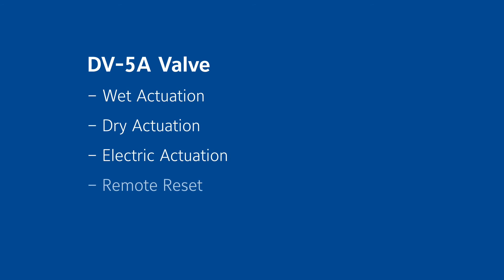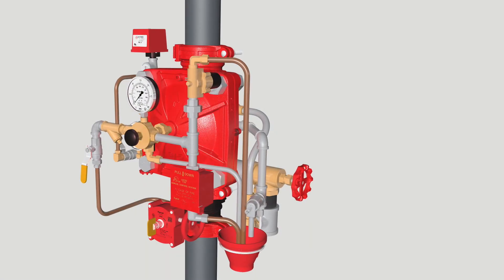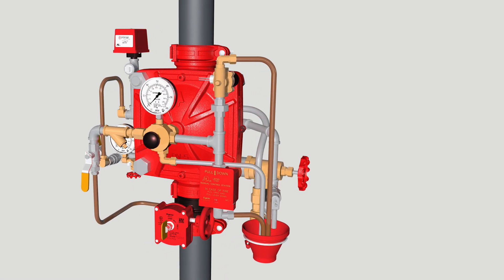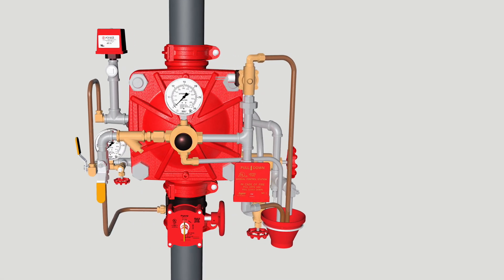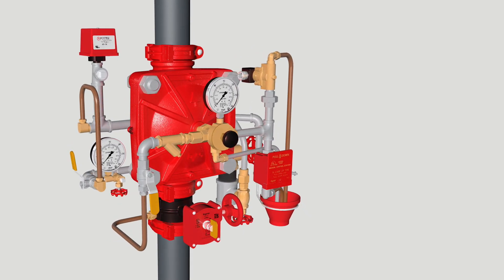The DV5A deluge valve is available in a range of sizes and connection types for wet actuation, dry actuation, electric actuation, remote reset and remote reset pressure reducing systems. The DV5A's higher pressure rating and lower pressure drop allows water to travel further and specifies system pressure for rapid fire protection.